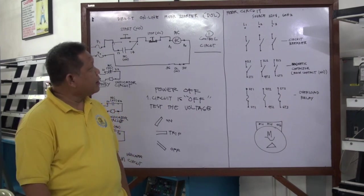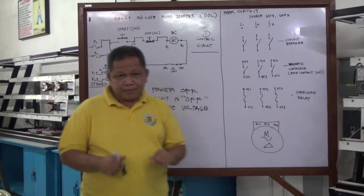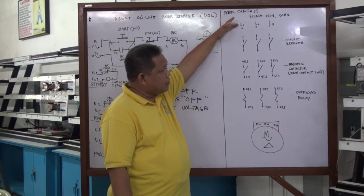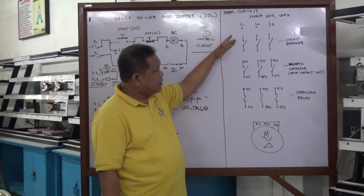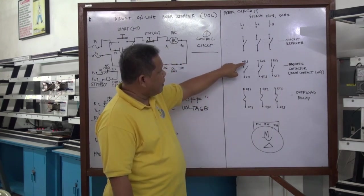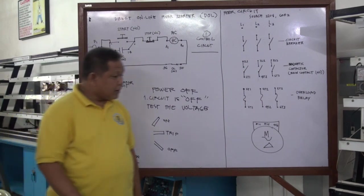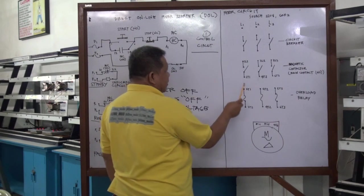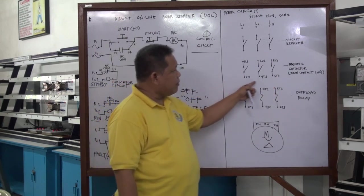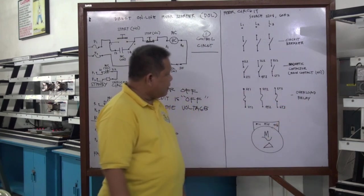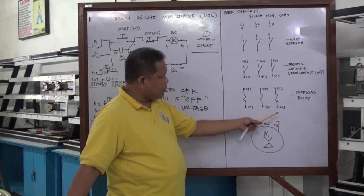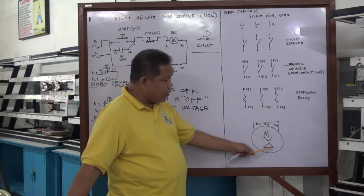In the motor circuit, we are going to have our source, which is Line 1, 2, 3. Then our circuit breaker for protection. Then our magnetic contactor main contacts with terminals 1L1, 3L2, 5L3, 2T1, 4T2, and 6T3. Take note this is the main contact of the magnetic contactor. For the overload relay, we have terminals 2T1, 4T2, and 6T3, and then our three-phase AC motor connected in delta.